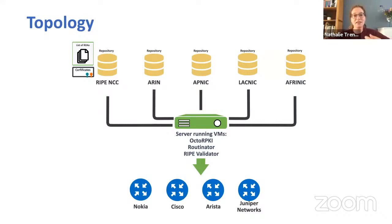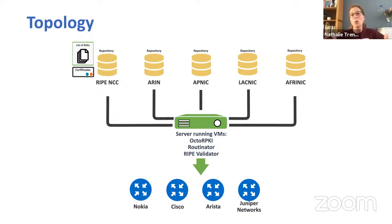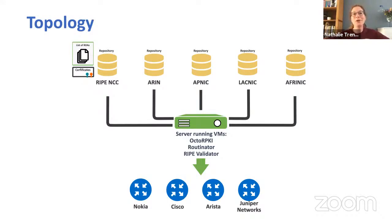The validators basically say: is something cryptographically valid? They feed the data to the routers, and then the routers match the BGP announcement with the list of ROAs to see if there is a ROA that matches. If something else is happening — so there is a ROA, but the BGP state does not match it — then we consider that a BGP RPKI invalid, and it should be dropped. The goal of this webinar is to show you how to drop invalid BGP announcements.